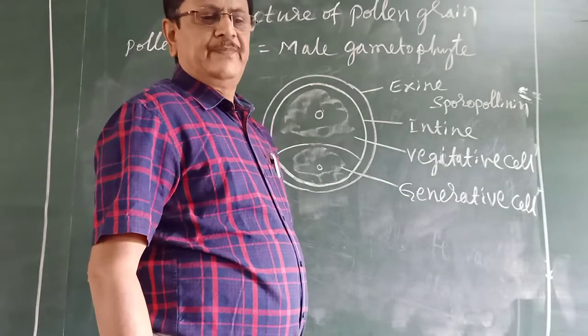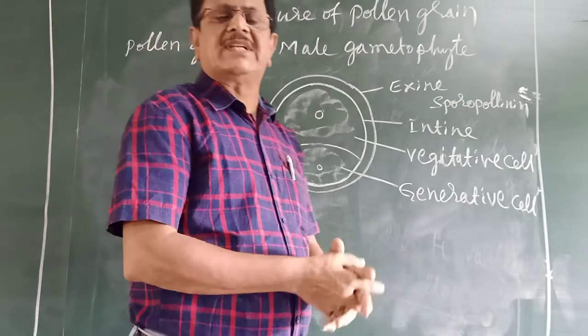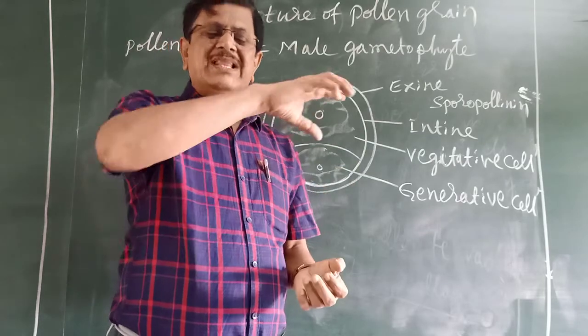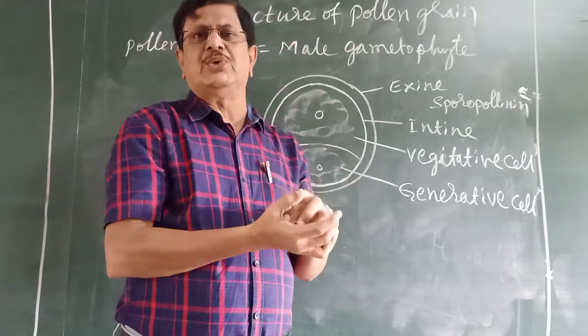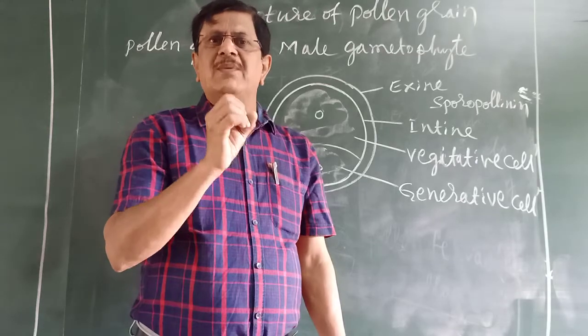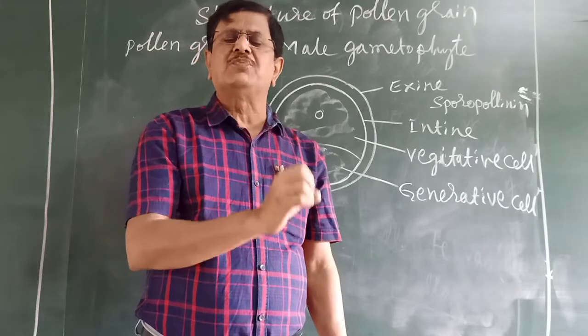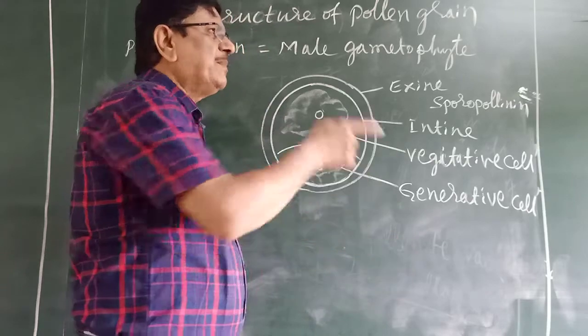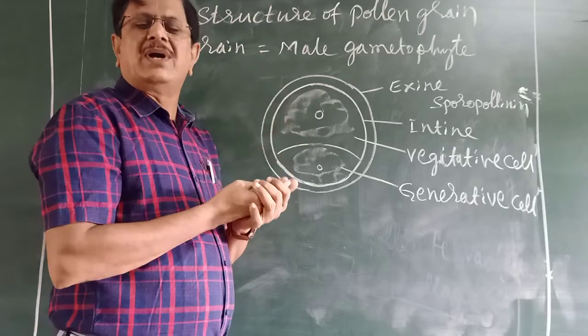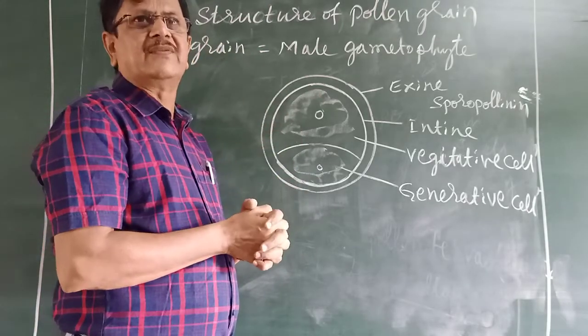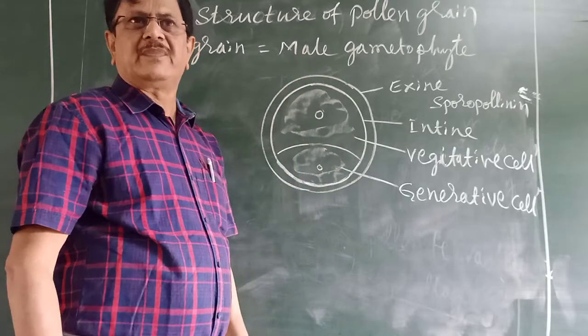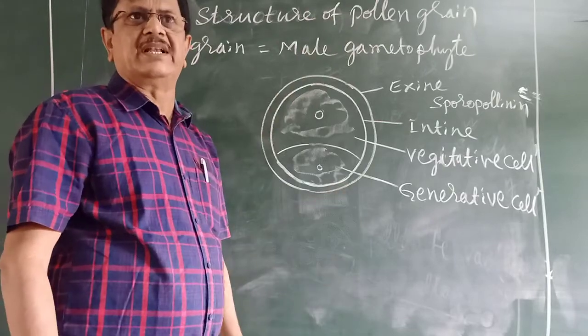Yesterday we studied the transverse section of anther lobe. In that anther lobe, sporogenous tissue has a special type of cells called pollen mother cell or microspore mother cell. That microspore mother cell undergoes meiosis. Four joint haploid cells are produced, forming a pollen tetrad, and then the pollen tetrads separate into individual pollen grains.